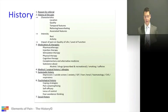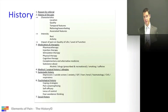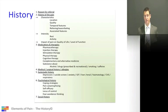The second heading is the history of the pain, which I'll elaborate on shortly. Number three are the medications and therapies that the patient is taking and has taken — not just medication and drugs, but what other things has the patient trialled?